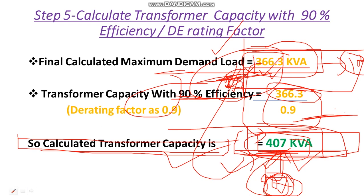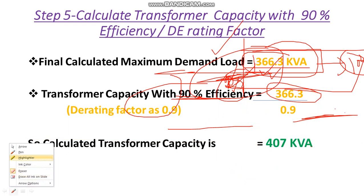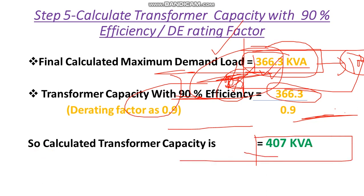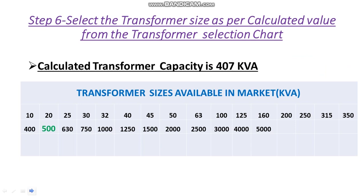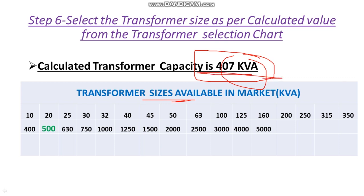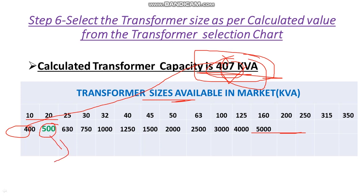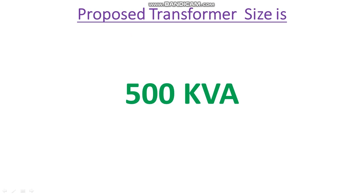We may not find the exact calculated transformer size of 407 kVA in the market, so we select from the transformer selection chart. The chart ranges from 10 kVA to 5000 kVA. Since 400 kVA is below our calculated value, we always select a size higher than the calculated value. The next available standard size is 500 kVA, so our final selected transformer size for this hotel building is 500 kVA.